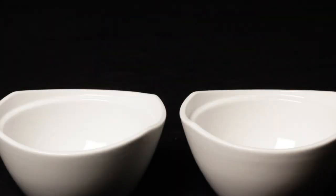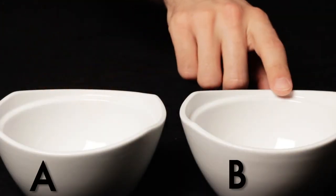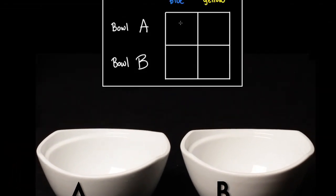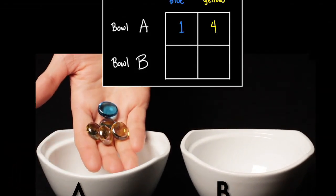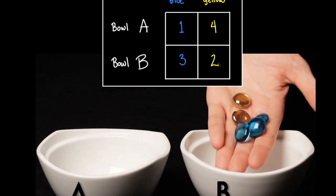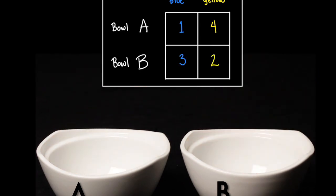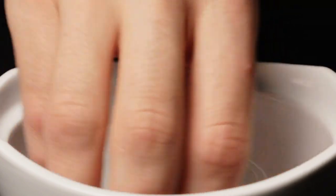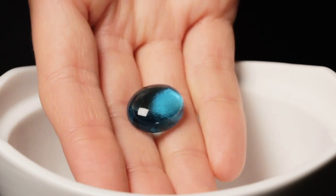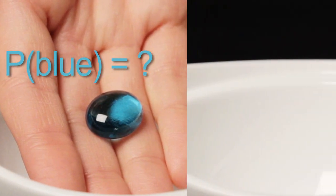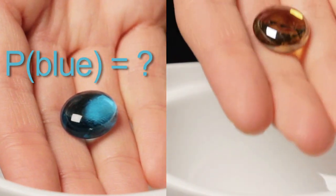Suppose that in front of you are two bowls labeled A and B. Each bowl contains five marbles. Bowl A has one blue and four yellow marbles. Bowl B has three blue and two yellow marbles. Now choose a bowl at random and draw a marble uniformly at random from it. Based on your existing knowledge of probability, how likely is it that you pick a blue marble? How about a yellow marble?